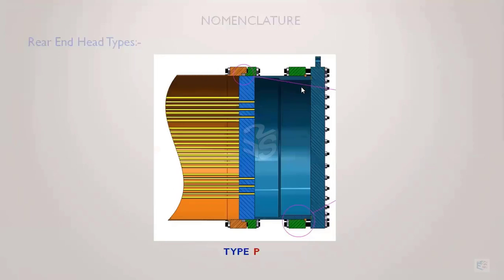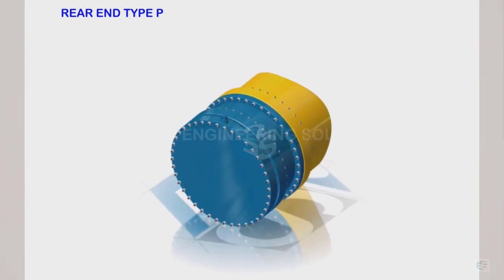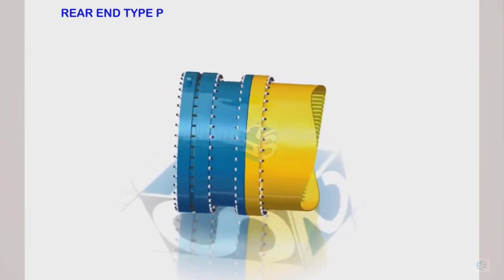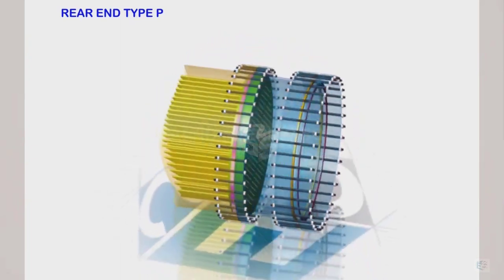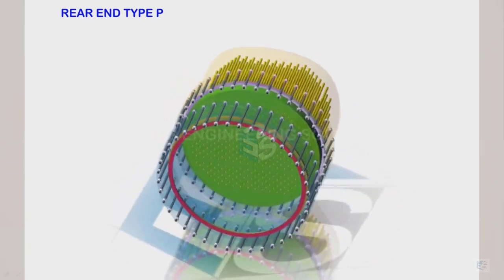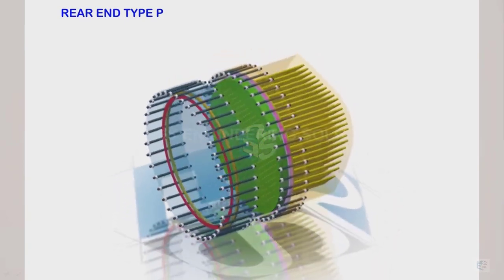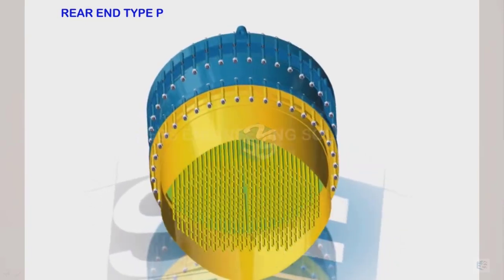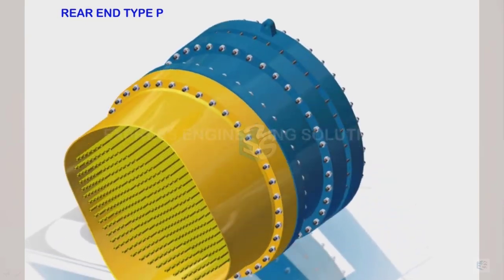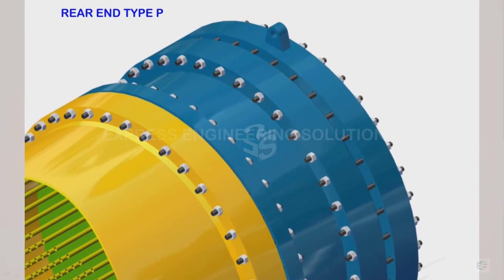This is the assembly of Type P, the externally packed floating head. The tube portion and shell side are shown cut away so we can concentrate on the rear end region of the channel side, which is rear end type P.